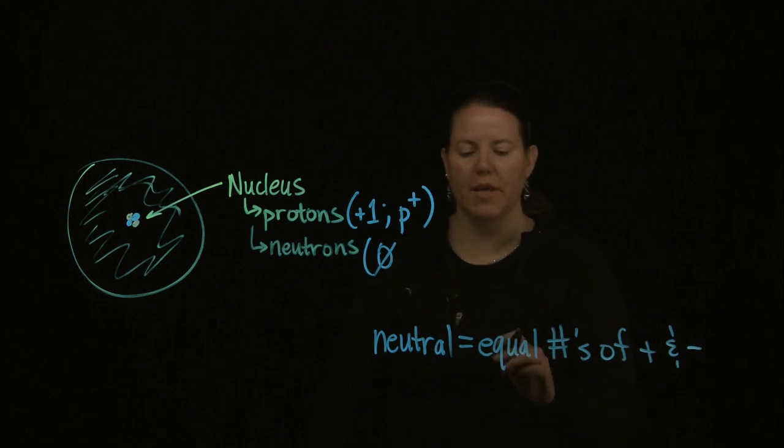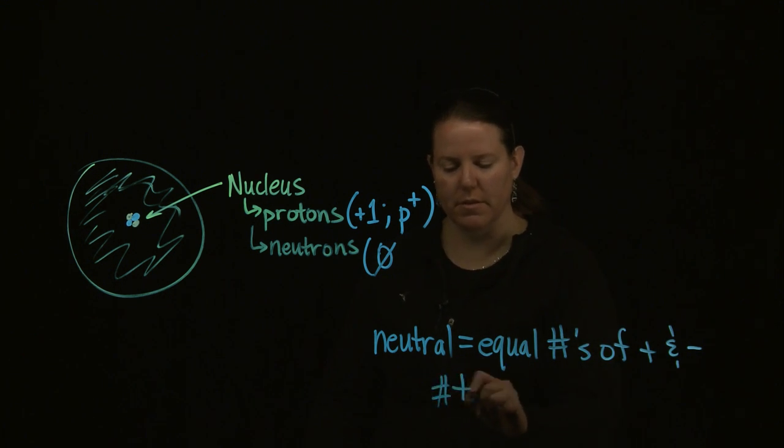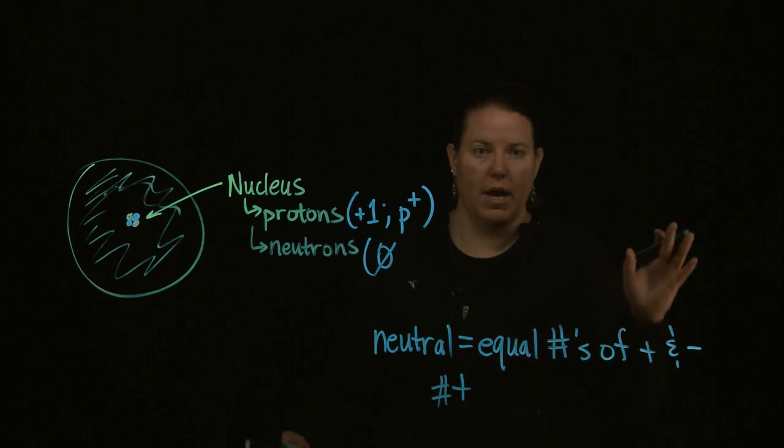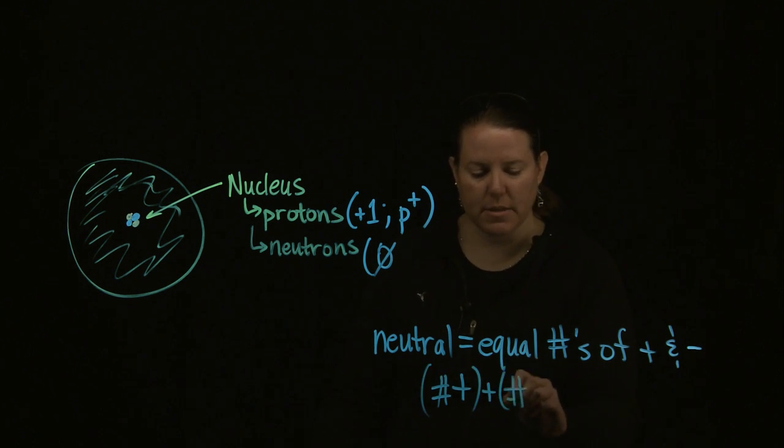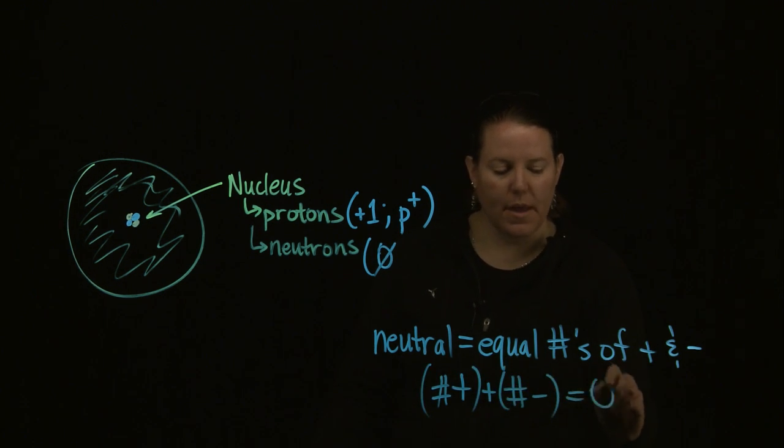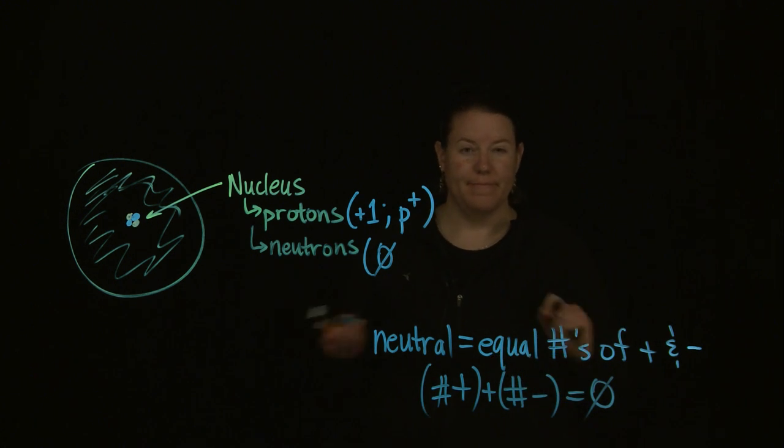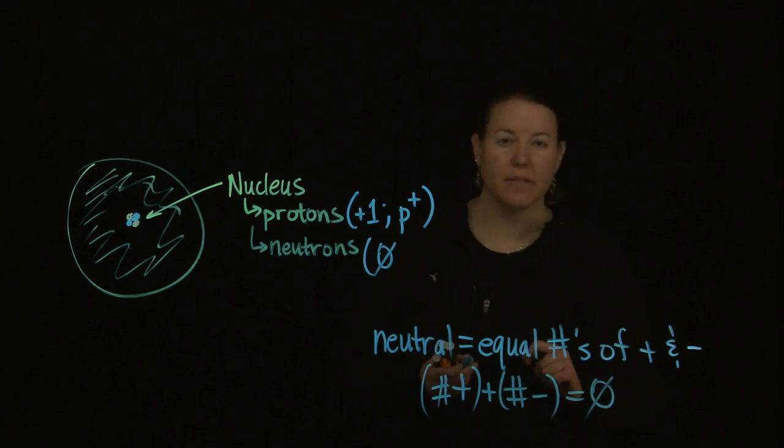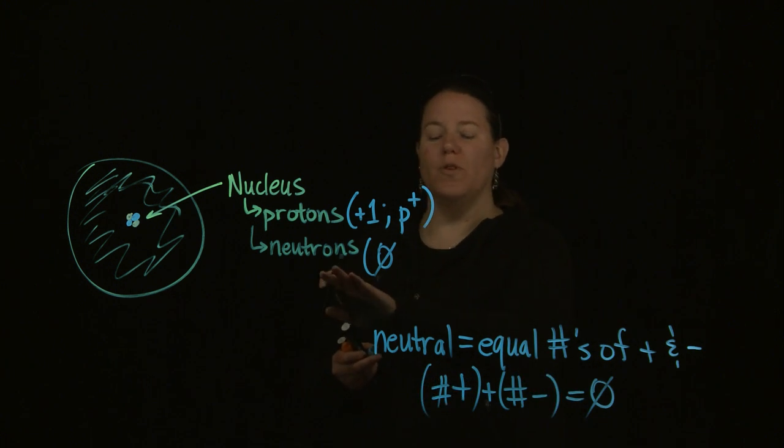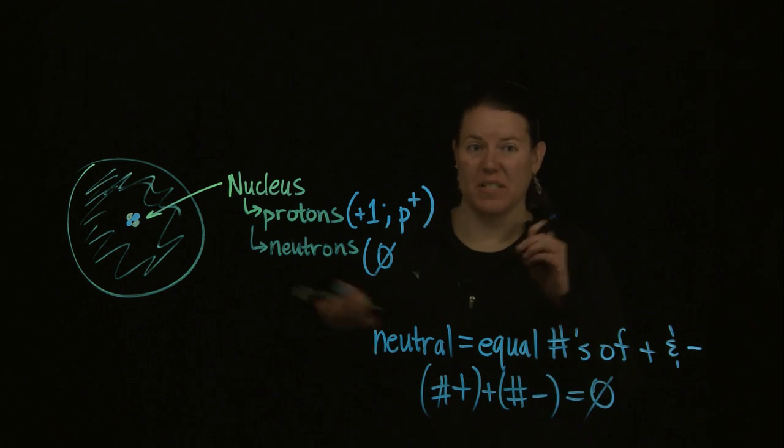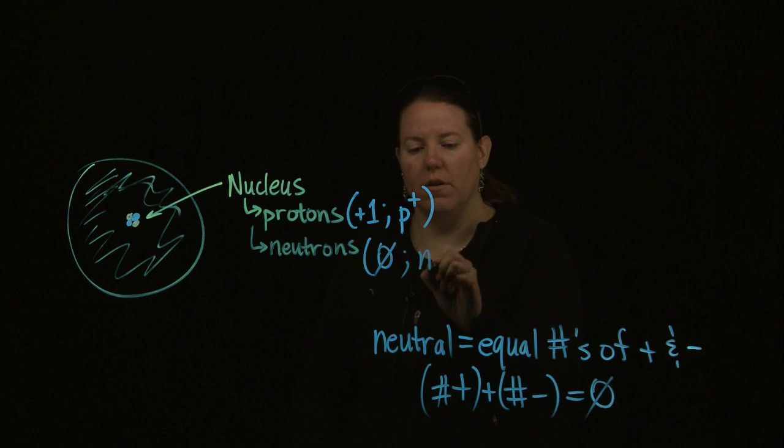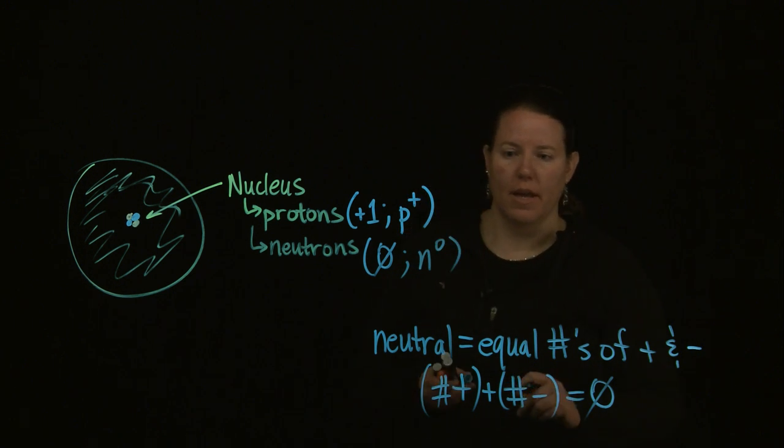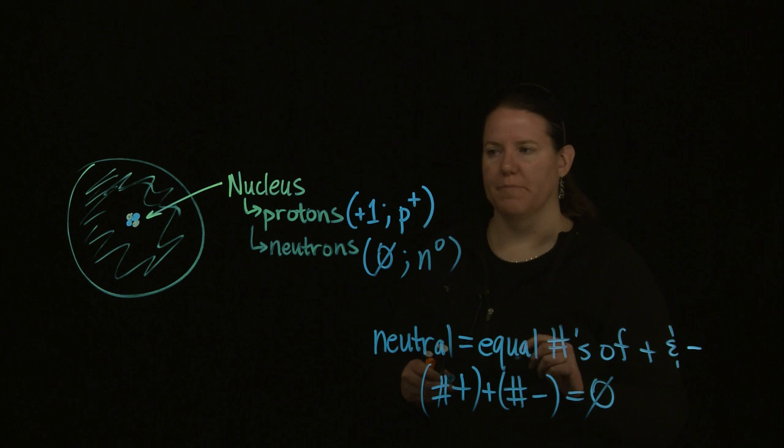Neutral charges are a loaded term in chemistry, because what neutral means in chemistry, the vast majority of the time, is that it has equal numbers of pluses and minuses. So if you added the pluses to the number of minuses in that compound, their sum would be zero. That's what neutral means in chemistry. Neutrons are not quite that—they have no charge at all, zero charge, and are designated with an n with a zero as its superscript.